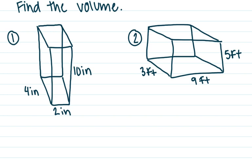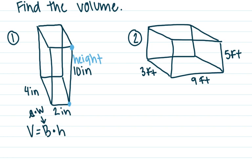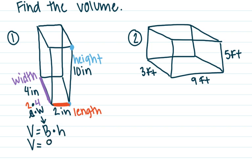Let's go ahead and solve some examples. Write your volume formula: Volume equals big B times H, and remember big B is length times width. Label your pieces: the 10 is the height — that's how tall the shape is. The length is 2 inches and the width is 4 inches. To find big B: length times width is 2 times 4, which is 8.